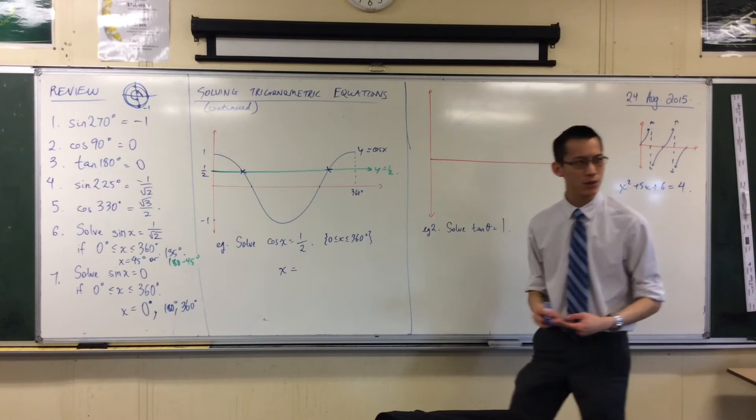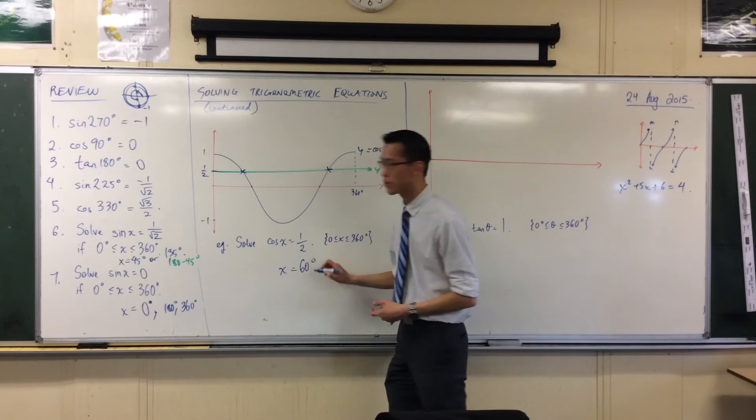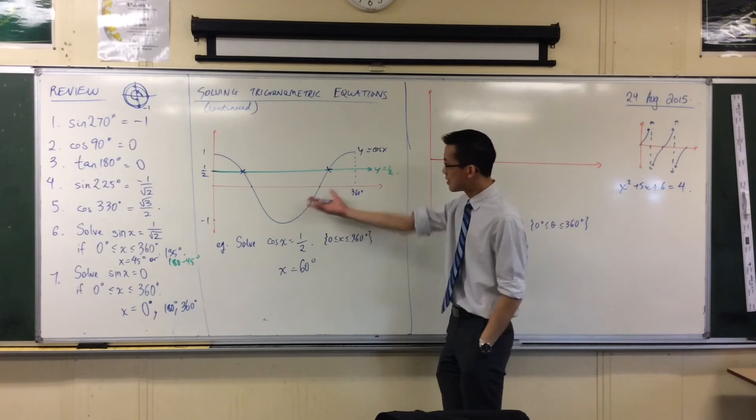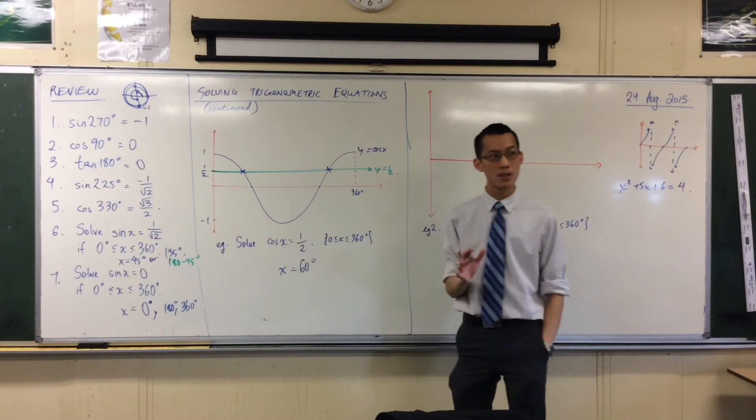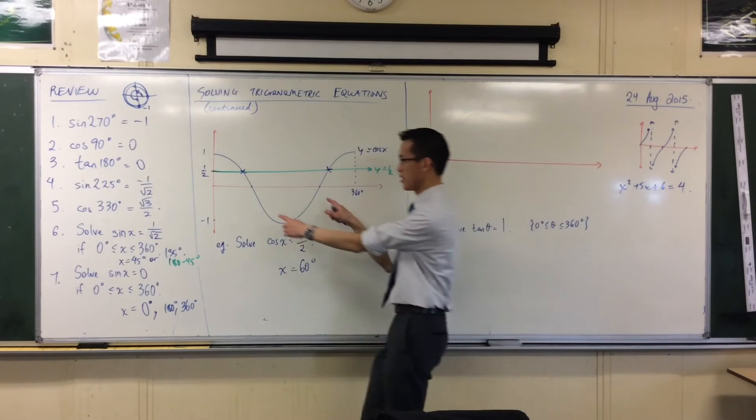What's the exact value for cos that gives you a half? It's 60 degrees. Now just pause for a second. Does that make sense? Let's have a look at our cosine graph. I haven't finished it off yet, it's gone from 0 to 360, but I haven't labelled all these important points here.